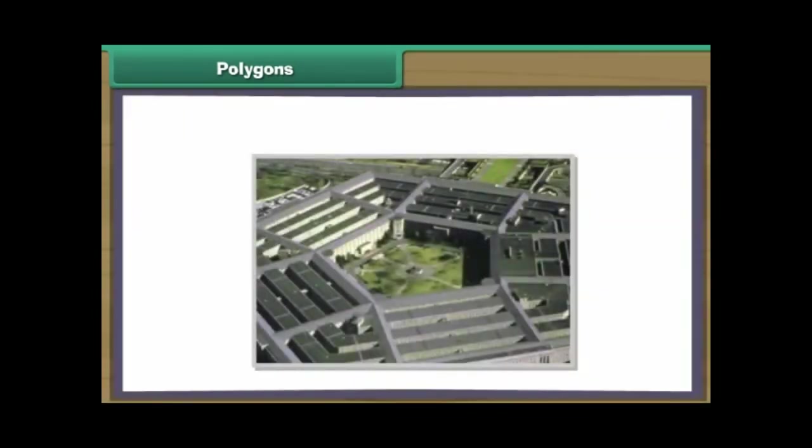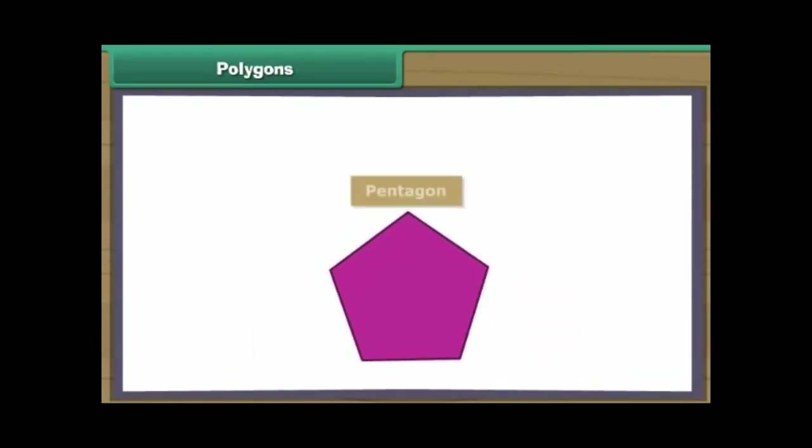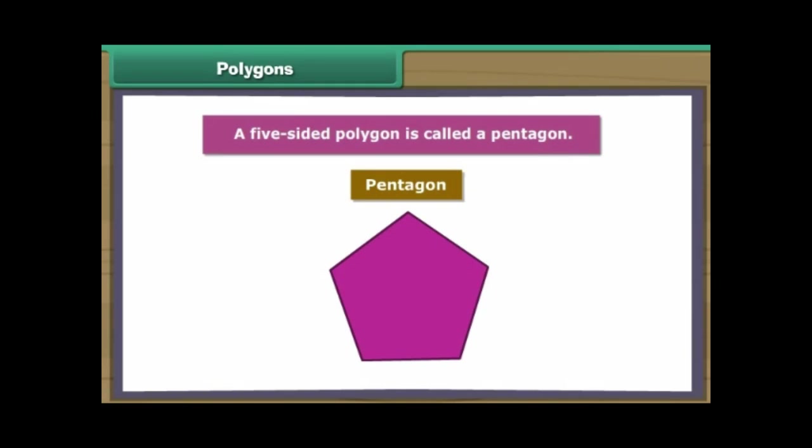Look at this image of US Army Headquarters. It is known as the Pentagon as it has five sides. A five-sided polygon is called a pentagon.